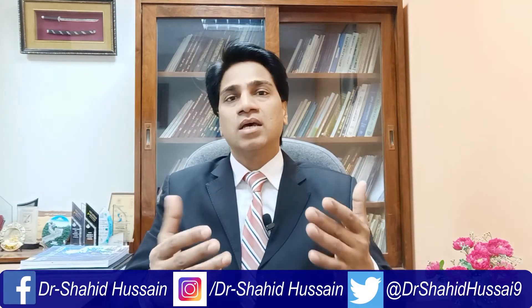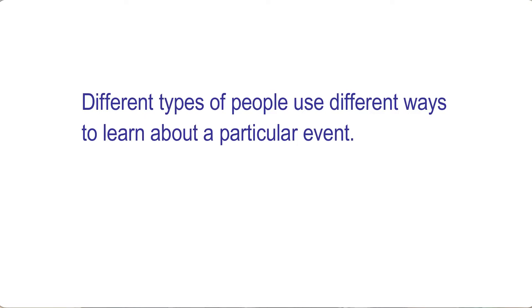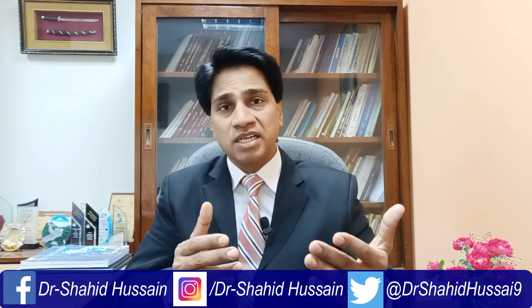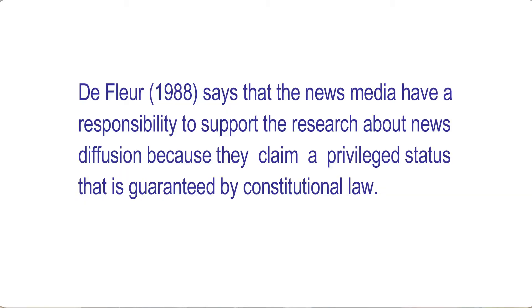When we talk about cognitive dissonance, social networks, and demographic variables, these also play an important role in news seeking patterns and news diffusion. Different types of people use different ways to learn about a particular event — these are demographic variables, social cognitive theory aspects. We are talking about selective exposure, selective retention, selective attention, and selective perception. These things play a role in the news seeking pattern, the communication seeking pattern, exposure, perception, and news diffusion patterns.